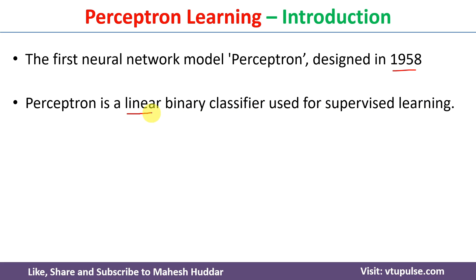Linear means perceptron learning can be used for classifying data which is linearly separable — that is, if a data is separable with a straight line, we can use a perceptron network. Also, if the data has only two classes, that is if the target has two classes, then we can use perceptron learning. If you have more than two classes, we cannot go with perceptron learning.